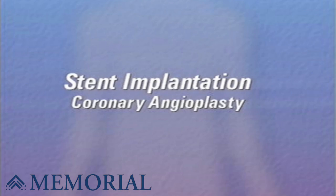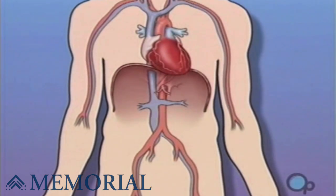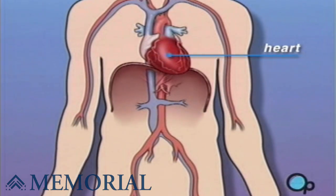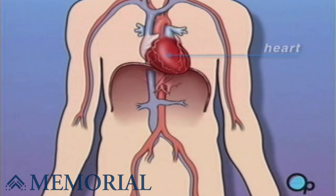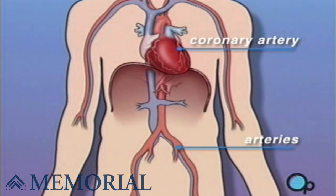Your doctor has recommended that you undergo a balloon angioplasty with a stent implant. But what does that actually mean? The heart is located in the center of the chest. Its job is to keep blood continually circulating throughout the body. The blood vessels that supply the body with oxygen-rich blood are called arteries. The arteries that supply blood to the heart muscle itself are called coronary arteries.